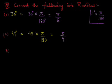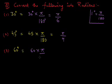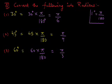Let's convert 60 degrees. 60 degrees can be written as 60 into pi by 180. After simplification — zeros cancel, 6 ones are 6, 6 threes are 18 — it becomes pi by 3.